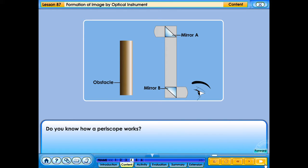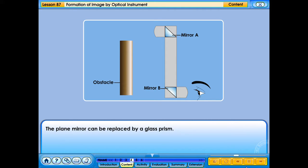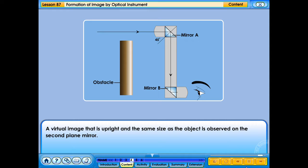Do you know how a periscope works? Both plane mirrors in the periscope are placed parallel to each other at an angle of 45 degrees. This makes the angle between the incident ray and the reflected ray as 90 degrees. The plane mirror can be replaced by a glass prism. Parallel light from a distance object enters the first plane mirror at the top of the periscope. This light is then reflected onto the second mirror. A virtual image which is upright and the same size as the object is observed on the second plane mirror.